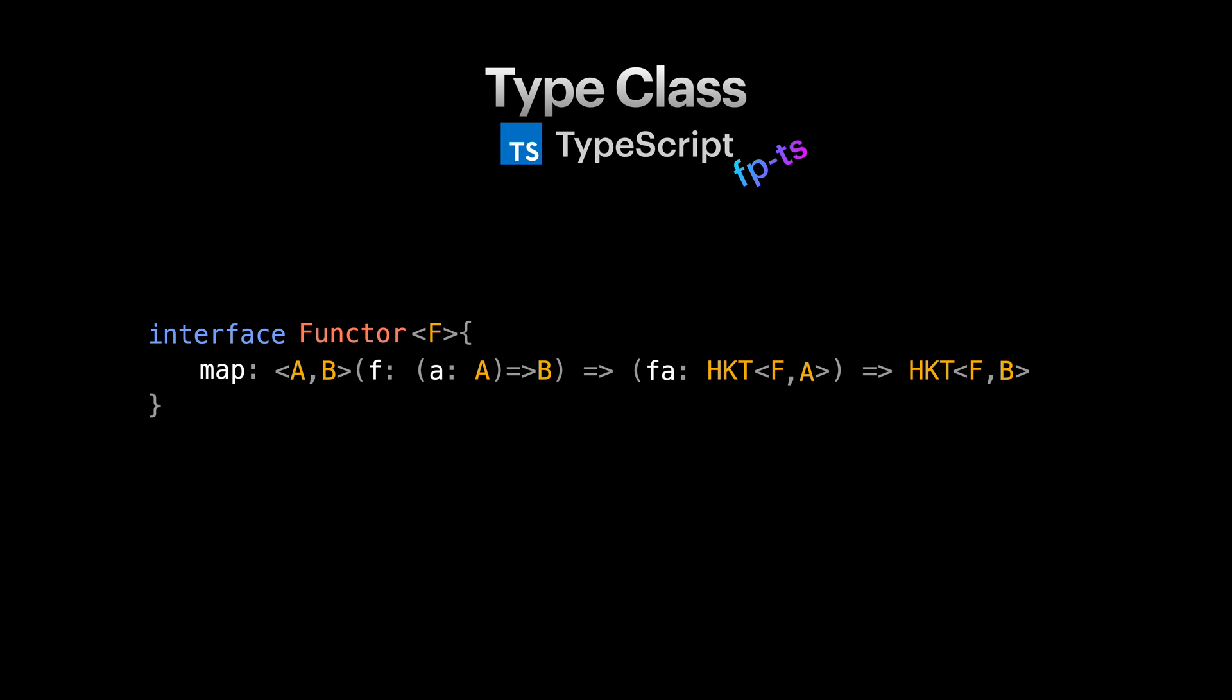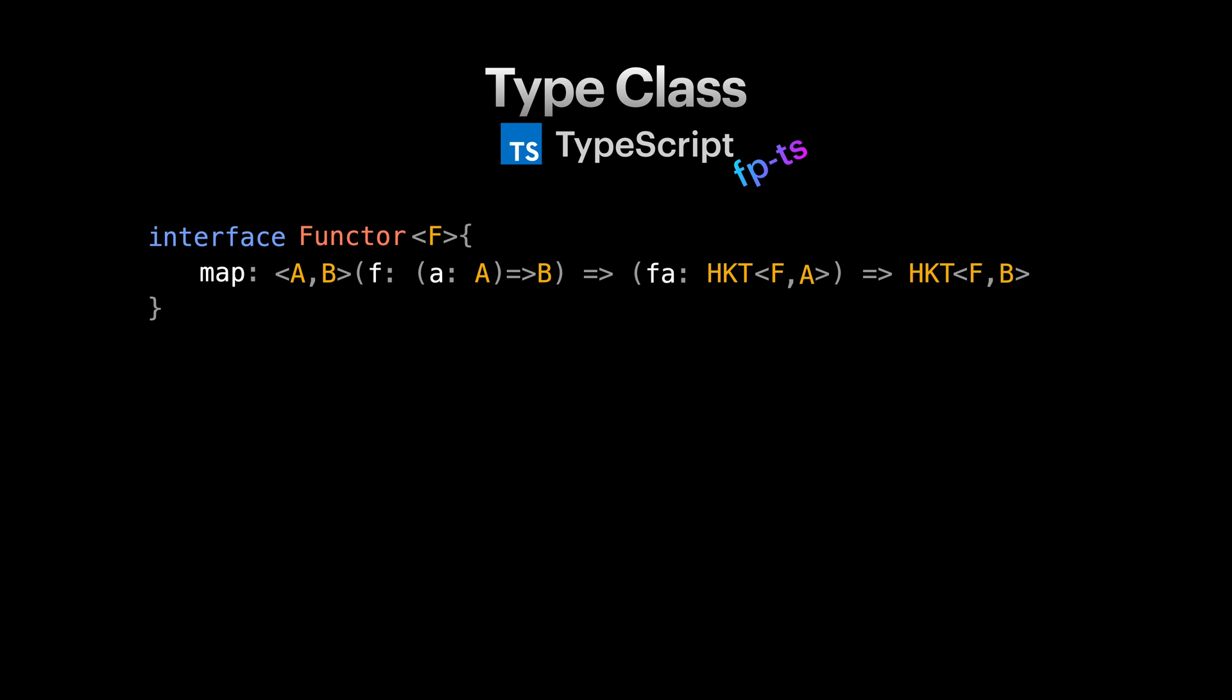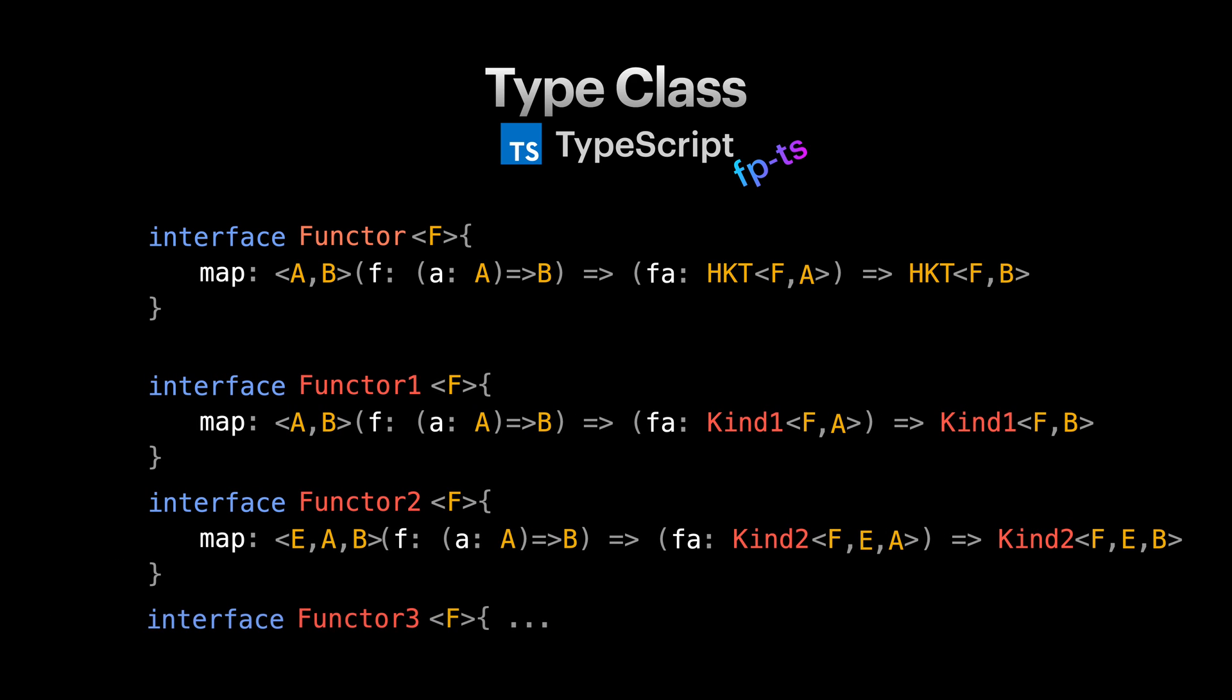FPTS makes hierarchical types possible by having HKT interfaces, which is short for hierarchical types. With the HKT interface from FPTS, we can model our functor definition like this. Unfortunately, there is more boilerplate code to this.